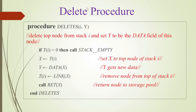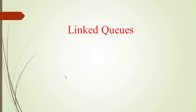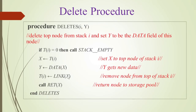Now we will see the delete procedure. We want to delete the top node from stack i and set y to the data field of this node. Top will remove the element and store it. First, we check whether the stack is empty — if T of I is equal to 0, it is empty. Then the top value is stored to x. X will be the same node as the top. Data of x is stored to y, and link of x — that is, the next node — is stored to T of I, removing the node from the top of stack i. Then we return x. We use temporary variables: x and t. T will move and then x will return.